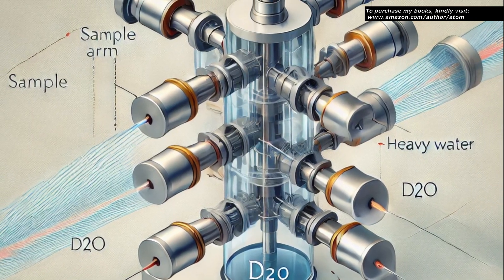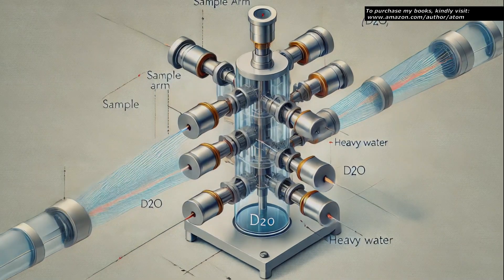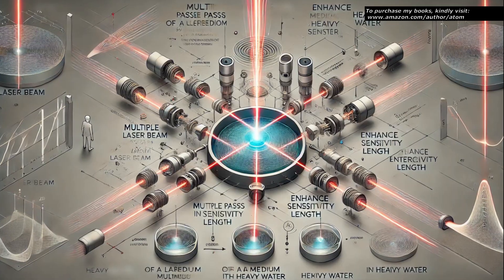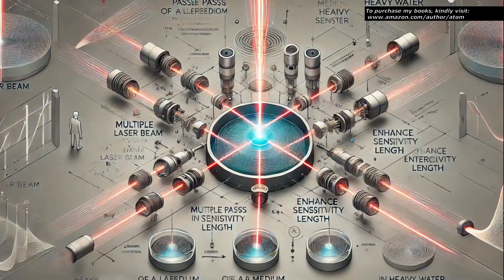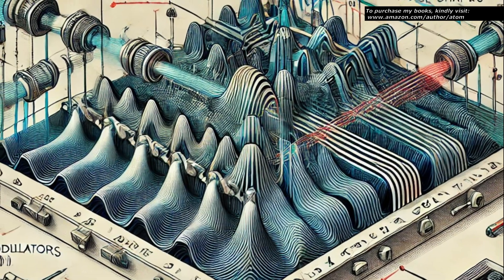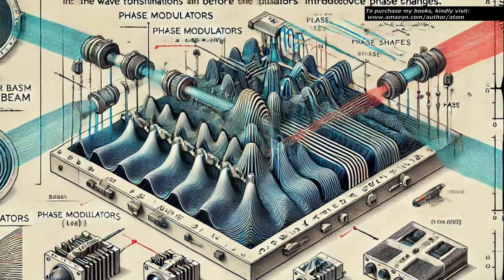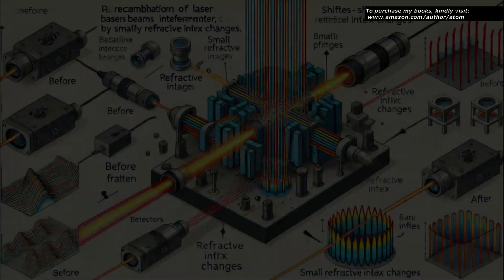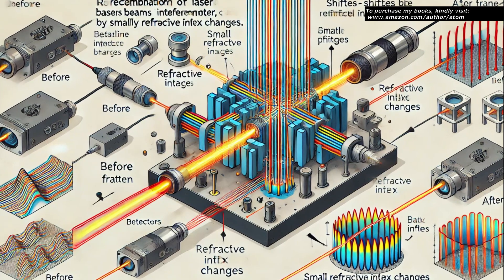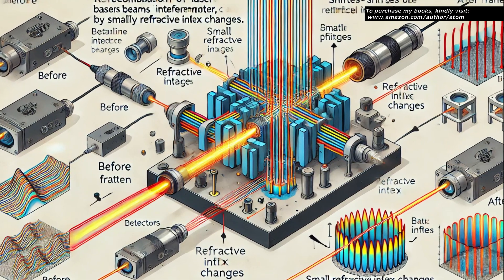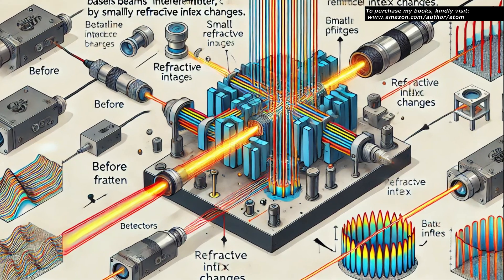In the sample arm, mirrors are arranged to direct the laser beam through the heavy water medium multiple times. This configuration amplifies the sensitivity of the interferometer by increasing the interaction length within the medium. Phase-sensitive detection is implemented by introducing modulators that apply a known phase shift to the laser beam. This allows for the detection of minute changes in the refractive index of the medium, which would manifest as shifts in the interference pattern when the beams from the two arms are recombined.